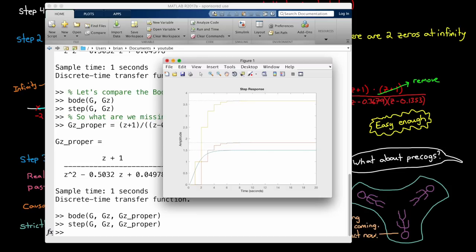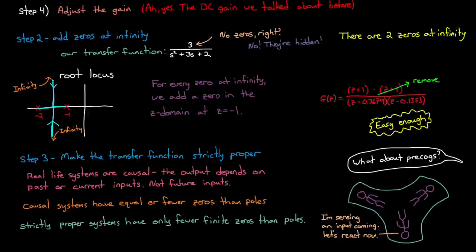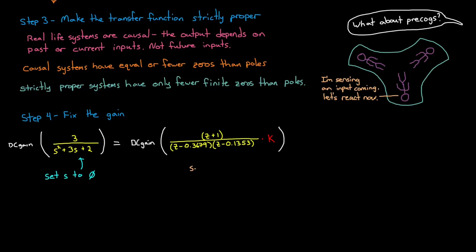A multiplier is applied to the z-domain function to make the DC gain value of both the z and s-domain functions the same. I'll add in the multiplier we're looking for in red. This is actually easier to do than you might think. As we learned before, the DC gain for a continuous system is found by setting s to 0. And the DC gain for a discrete system is found by setting z to 1. With a little bit of algebra, we find that the multiplier for the z-domain transfer function is 0.4099.